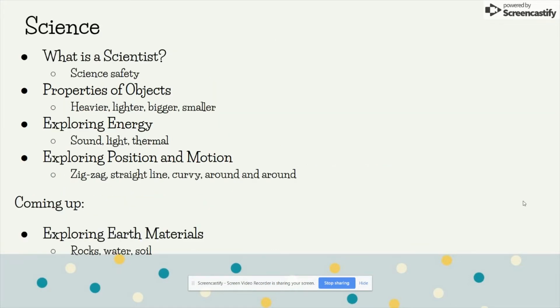In science, we've been learning what is a scientist and how to stay safe when we're doing science. Properties of objects such as heavier, lighter, bigger, and smaller. Exploring energy such as sound, light, and thermal. Exploring position and motion — how objects move in a zigzag pattern, straight line, curvy, around and around.